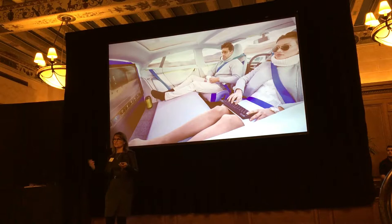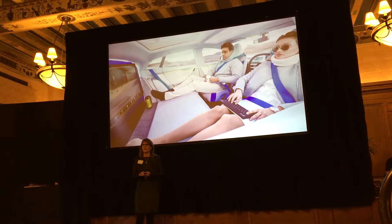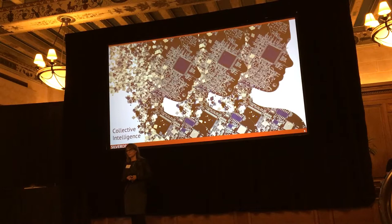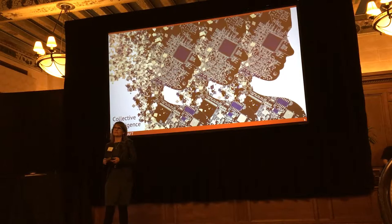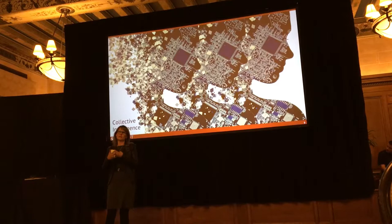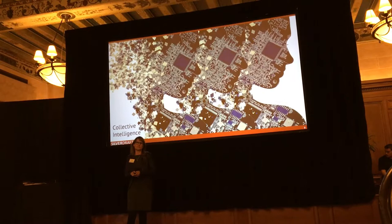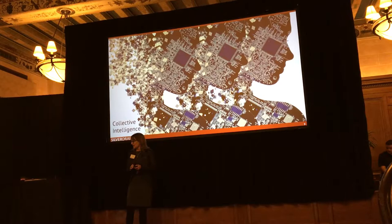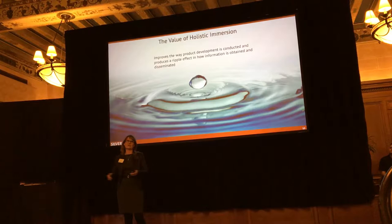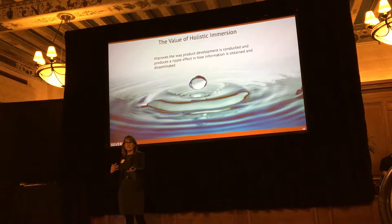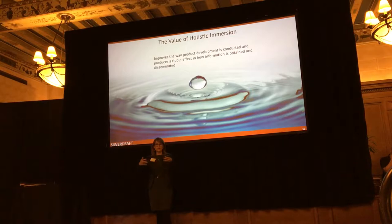Going back to Engelbart, he talked about collective intelligence — such a great term. His thought was that if you could get a lot of information together and present it to people in a way they can consume and understand at the time they needed it, they would be able to make smarter decisions that would make the world a better place. Context is key to that. In automotive, I think about the ripple effect that happens when you can get information and disseminate it to others in a way that is natural and good, propagating throughout organizations.